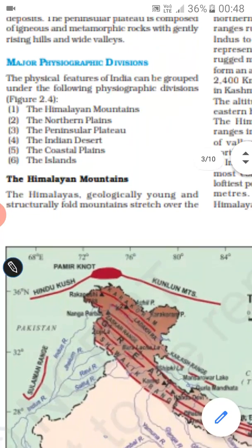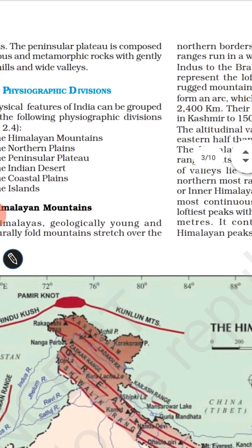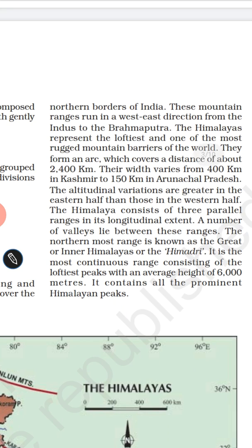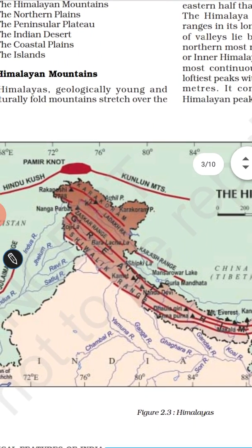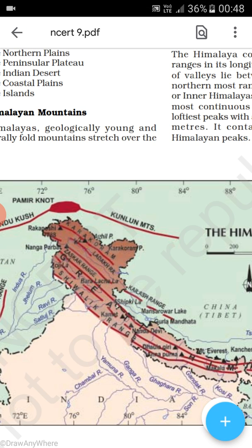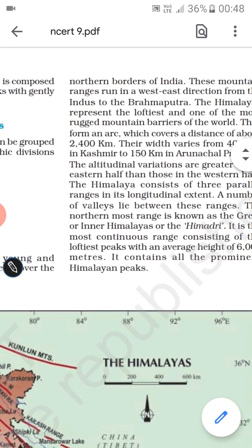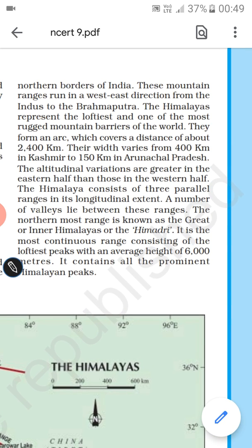Dear students, you will see the Himalayan mountains. You can see from the map — this is the Himalayan mountain range located in the northern part of the country. These mountain ranges run in an east-west direction from the Indus to the Brahmaputra.